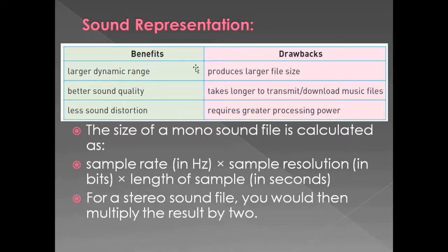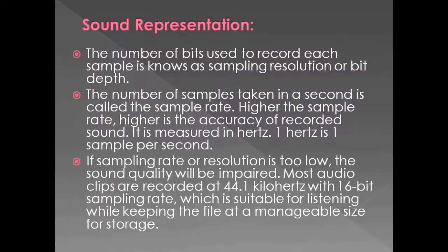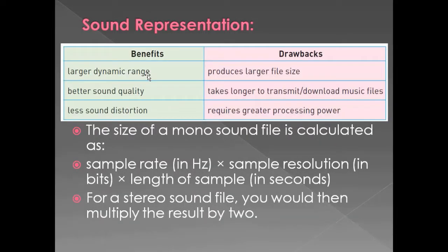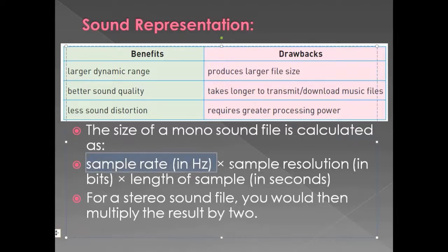The benefits of a higher sample rate or sampling resolution include a larger dynamic range, meaning more types of sounds can be recreated, better sound quality, and less distortion. The drawbacks are a larger file size, longer upload or download times, and greater processing power required. The size of a mono sound file is calculated as: sample rate in hertz multiplied by sample resolution in bits multiplied by length of sample in seconds. For a stereo file, multiply the result by two, since two channels record simultaneously.